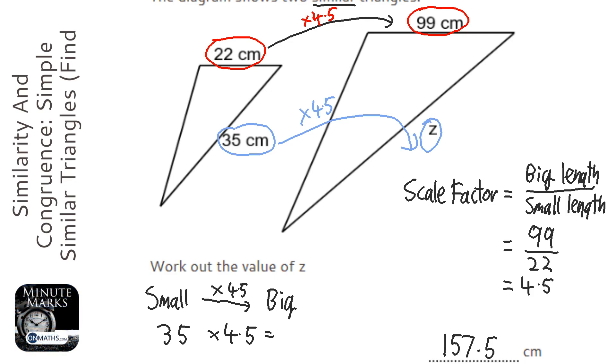Now last thing is just check that makes sense. Well, 35 is bigger than 22, so that's a longer side there, and so we're expecting it to be bigger than 99. It's 157.5 and we're expecting it to be bigger, therefore it's probably correct. Always make sure that it makes sense. If I got an answer of seven or something, well it's a bigger triangle so it wouldn't be less than 35.